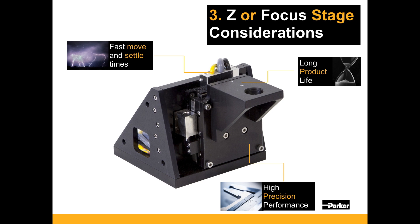This axis must also have high life, as it will move three to four billion times over the life of the machine.